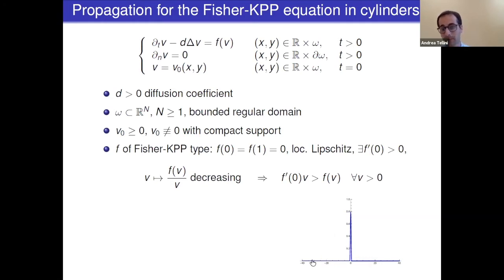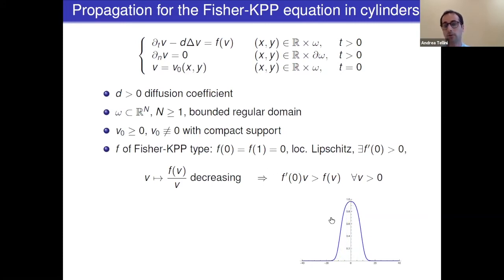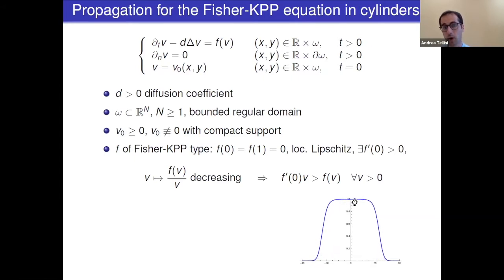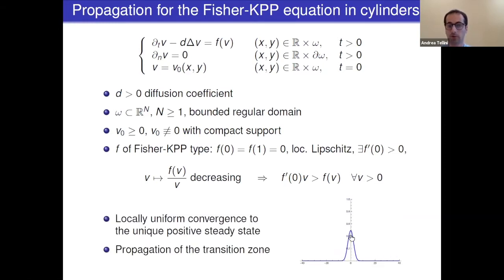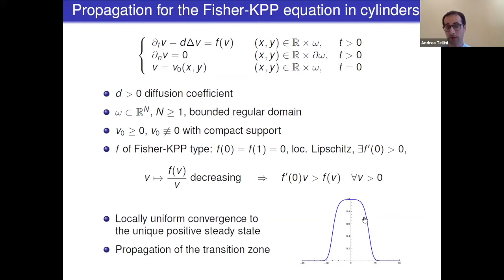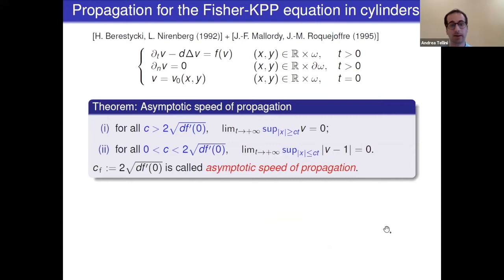Starting from an initially compactly supported datum — say we're on the whole line — we have two phenomena. In the central part there is convergence to 1, the positive state, while far away the solution is still close to 0. There is a transition zone from regions where the solution is close to 1 to regions where it is close to 0, which moves in time. We want to study how this transition zone moves asymptotically in time.